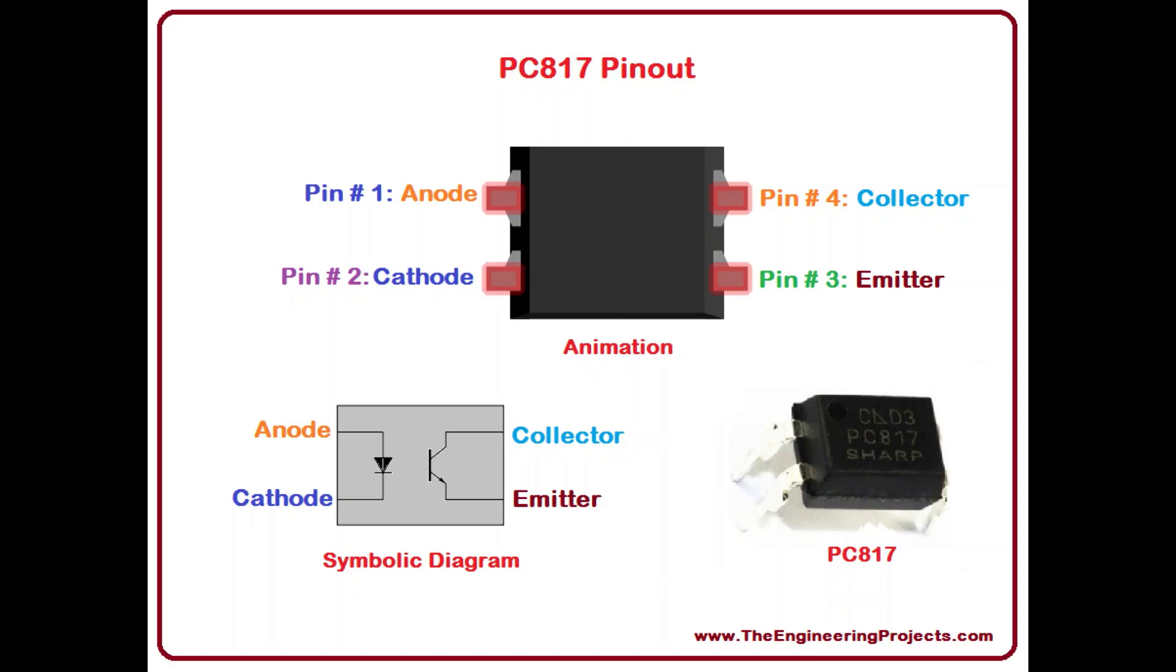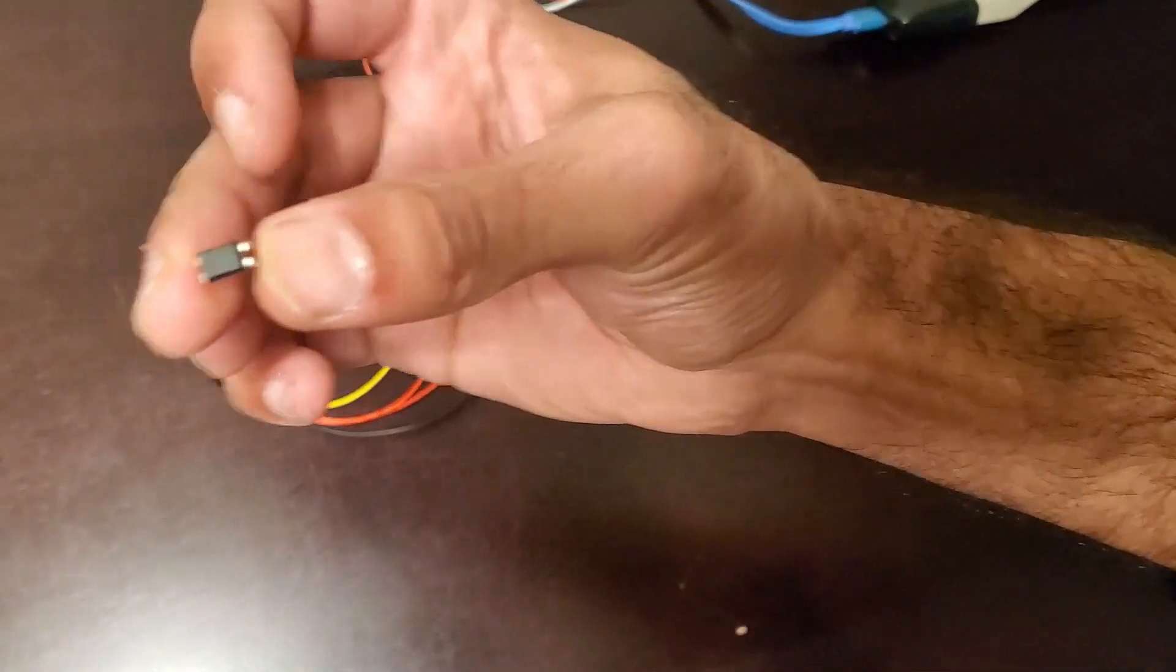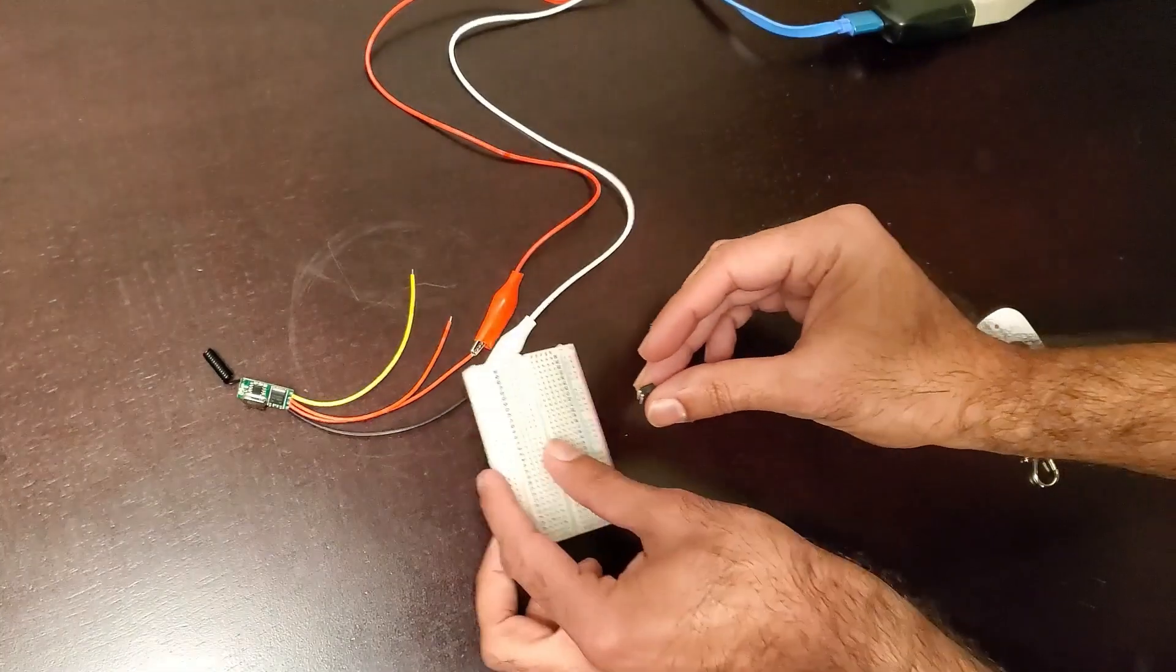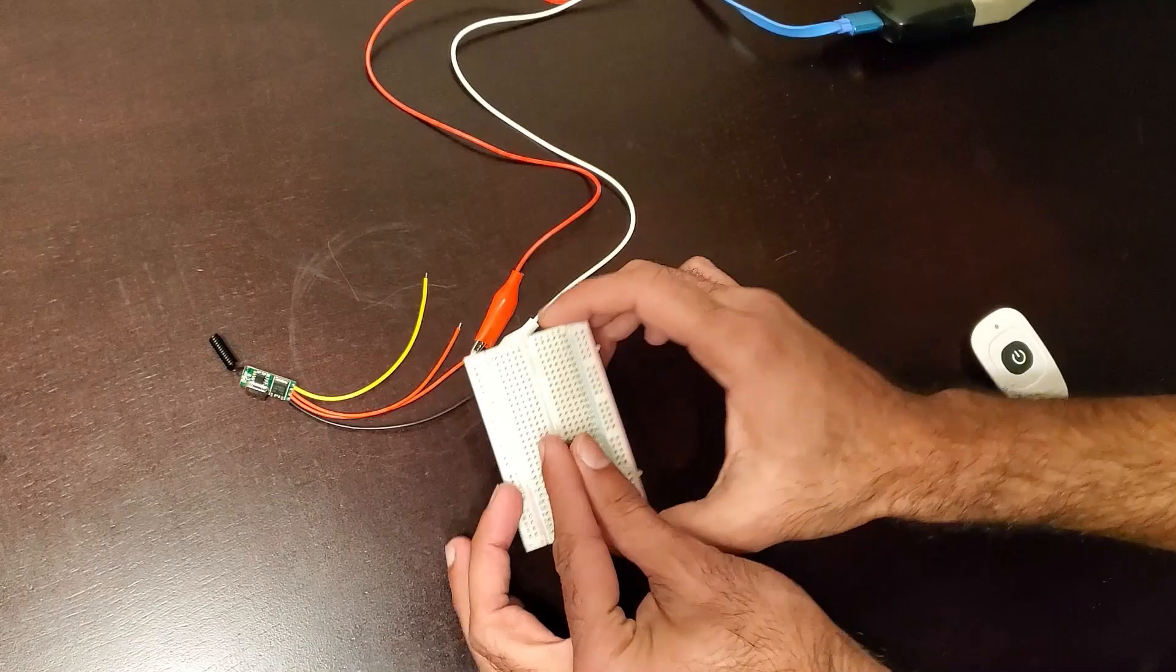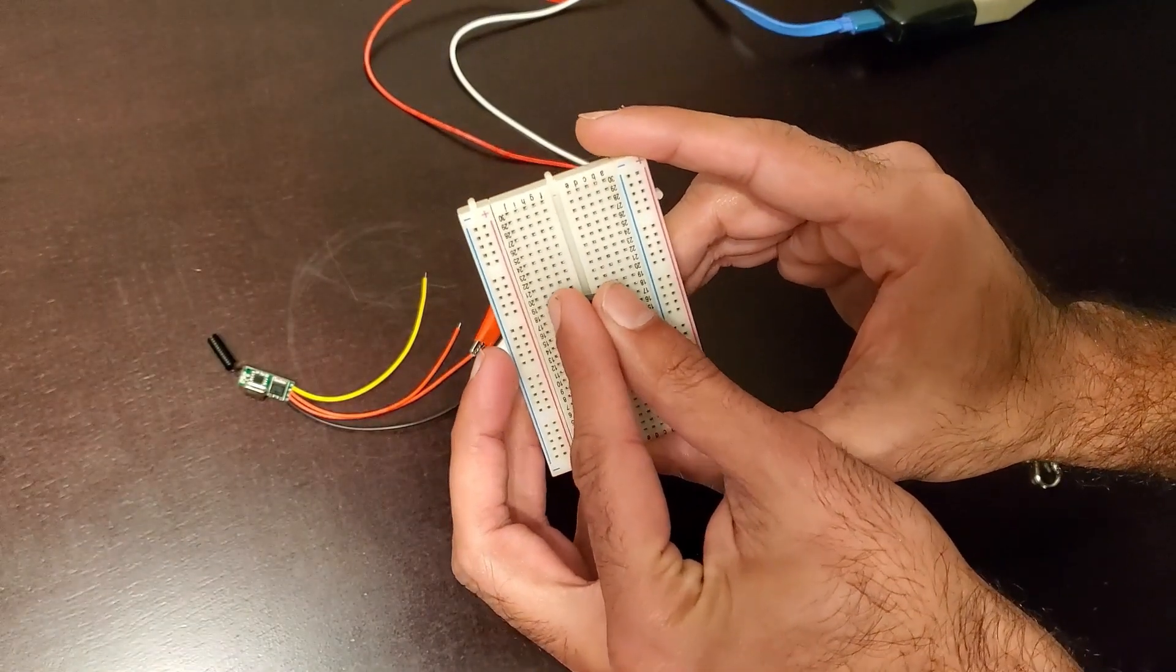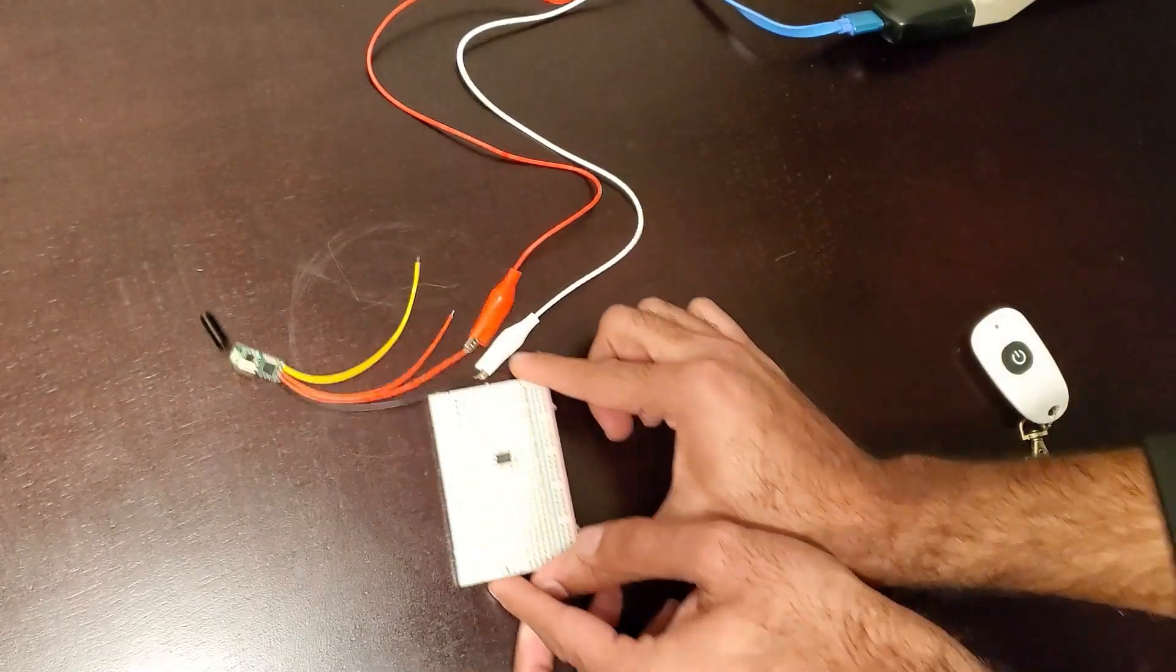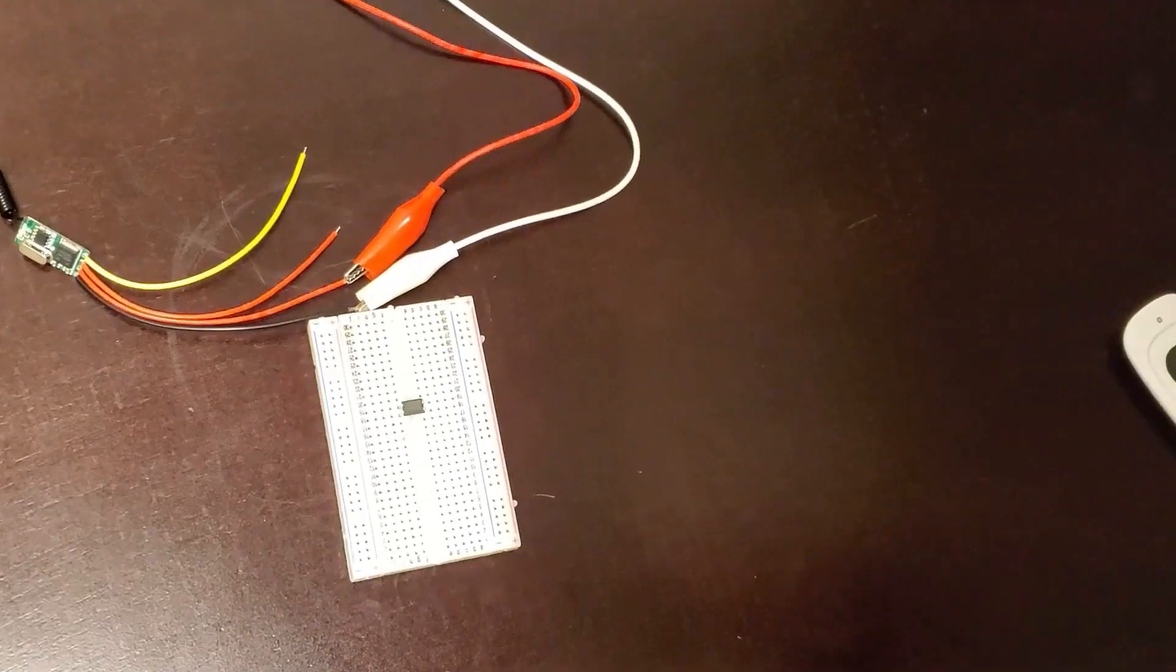The wiring for this demonstration is relatively simple. I placed the optocoupler in the middle of the breadboard, then I connected a 1 kilo-ohm resistor to the anode side of the PC817. This will prevent the LED from burning out. Then I connected the other end of the resistor to the positive rail of the breadboard.